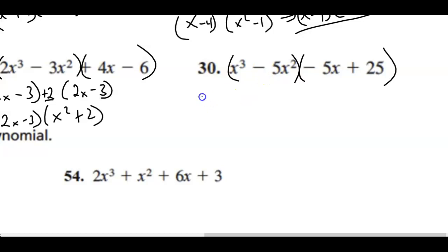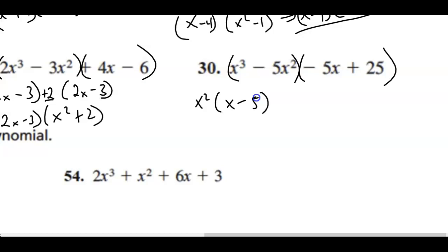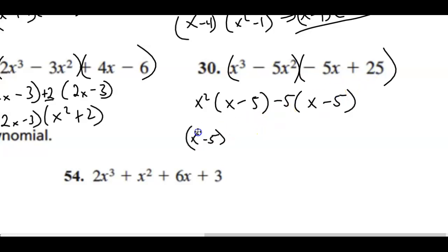One more factor by grouping: factor out x squared leaving x minus 5, then factor out negative 5 also leaving x minus 5. Factoring out x minus 5, we're left with x squared minus 5, giving final answer (x minus 5)(x squared minus 5).